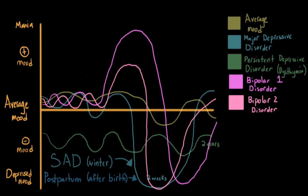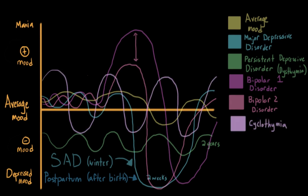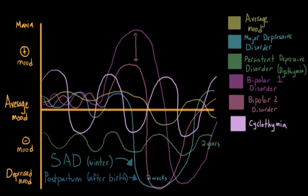In bipolar II disorder, individuals cycle between depression and hypomania, which is a less extreme version of mania. We also have other disorders that are included in this group. One is known as cyclothymic disorder, or cyclothymia. This disorder is characterized by frequent mood swings, moving from a state of hypomania to a state of mild depression.